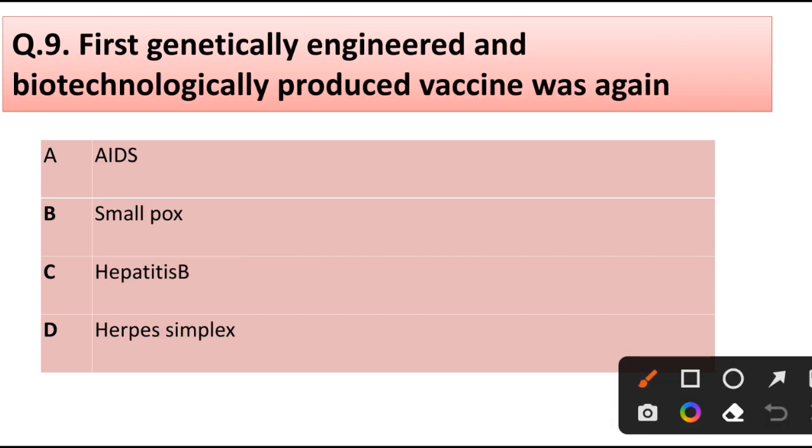Question number 9. First genetically engineered and biotechnologically produced vaccine was against: AIDS, smallpox, hepatitis B, or herpes simplex. Correct answer is option B, smallpox.